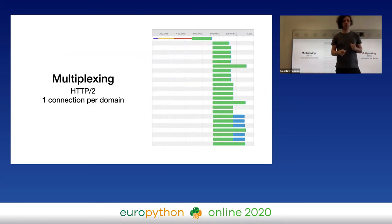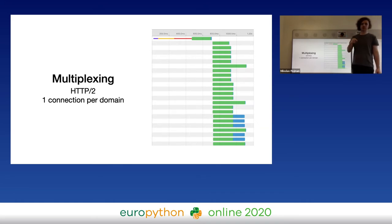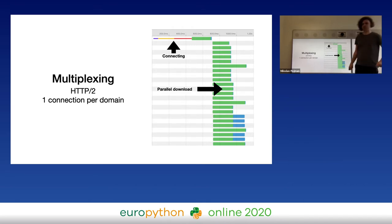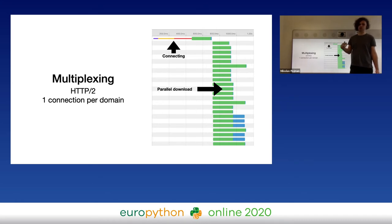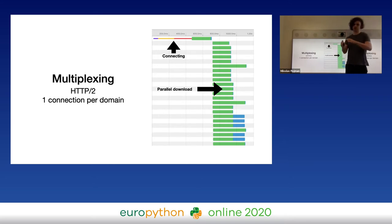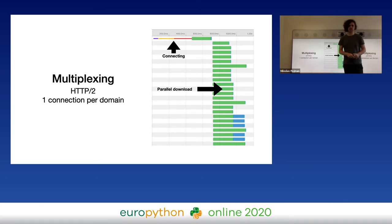With HTTP/2, browsers open one connection per domain only, and then use it to download all objects concurrently. The blue download times can be longer because the connection is shared, but avoiding the unnecessary waiting is a game changer. Today most top sites use HTTP/2. When performance matters, HTTP/2 should be used — with HTTP/1 you can be limited by latency, but with HTTP/2 that limitation is suppressed, allowing you to utilize most of the available bandwidth.